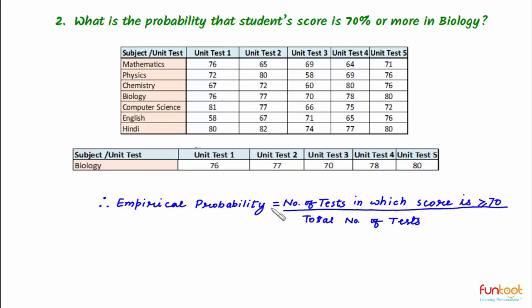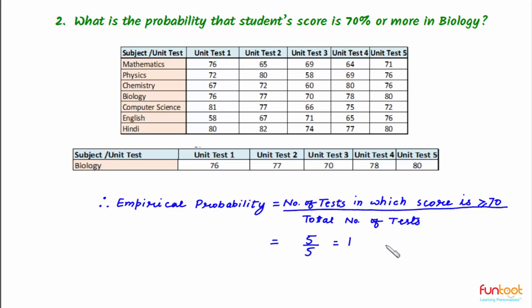Therefore, the empirical probability here will be the number of tests in which score is greater than or equal to 70, divided by the total number of tests. This will be equal to 5 — because in all 5 tests we have a score of 70 or more — divided by total number of tests, which is also 5. So this is equal to 1.